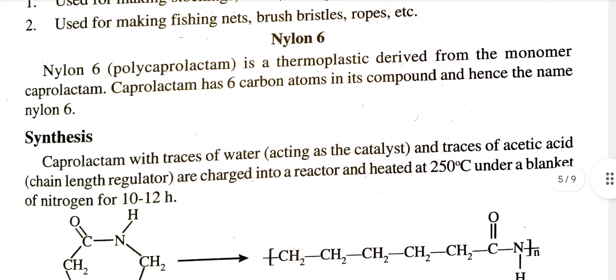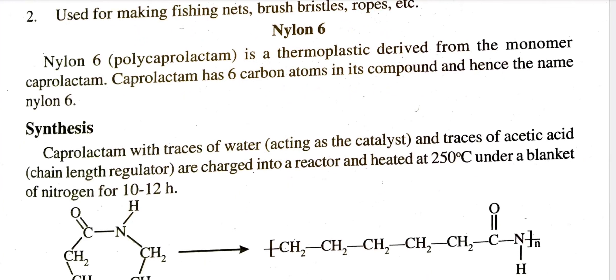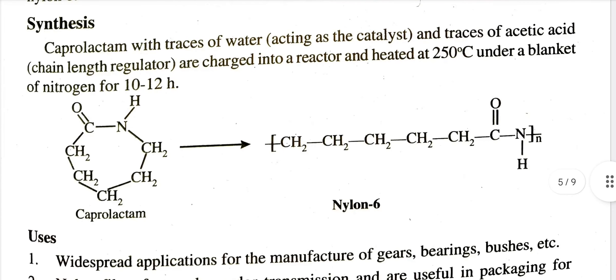Nylon 6 is a thermoplastic derived from the monomer caprolactam. Caprolactam has six carbon atoms in its compound, and hence the name Nylon 6. Its synthesis involves caprolactam with traces of water and traces of acetic acid charged into a reactor and heated to 250 degrees Celsius.